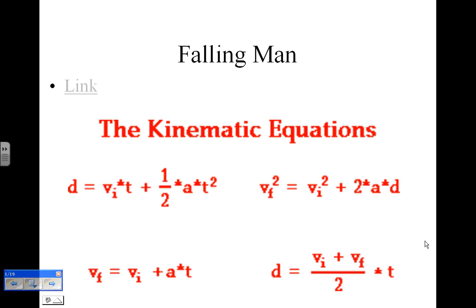We'll start out with a little discussion of the kinematic equations. I'm not going to do a whole lot with this other than to show it to you. These equations describe objects in motion. You have d, which represents distance; v is velocity; this little i subscript tells you that it's initial velocity; and t is time.